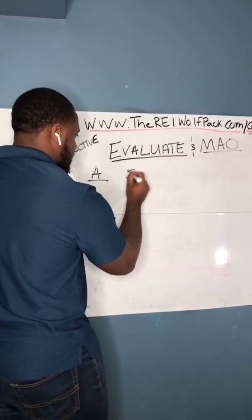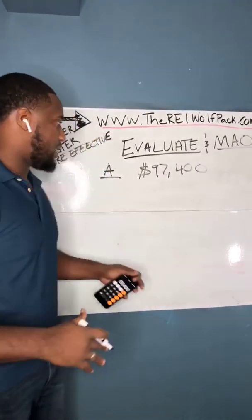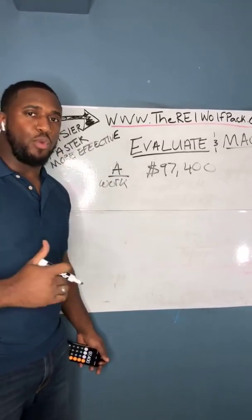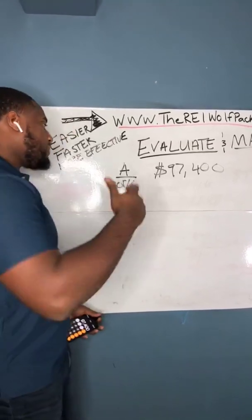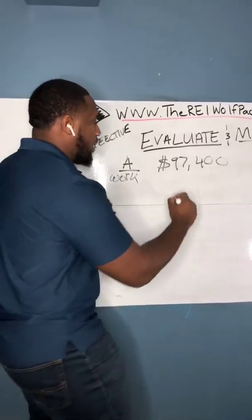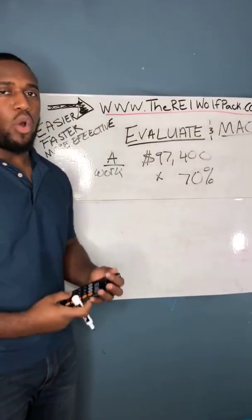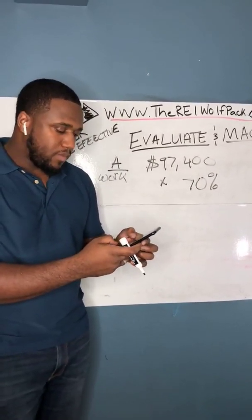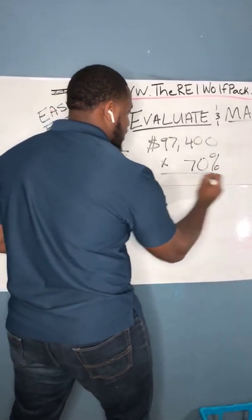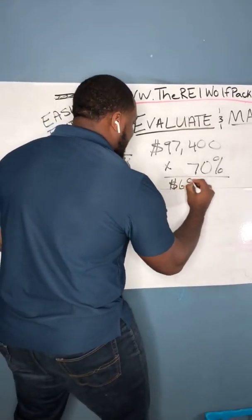So we've got $97,400. Now, because Property A needs work — it needs windows, a new roof, new flooring, carpeting — a lot of work — you're not going to offer $97,400 to the seller. What you're going to do next is multiply that $97,400 by 70%, or 0.7. That instantly drops it down 30%. And my new offer on this property is $68,180.